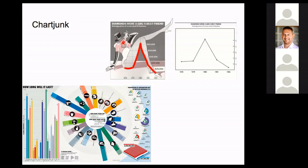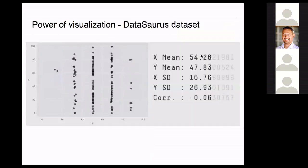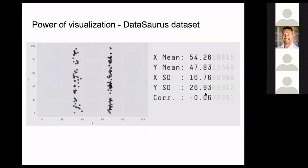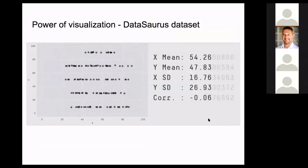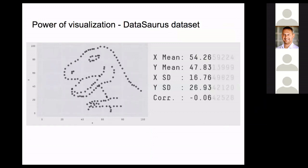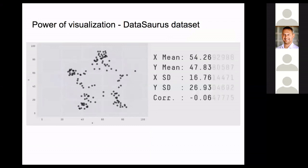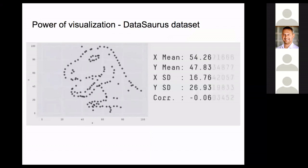To show the power of visualization: some of you may know Anscombe's data, where datasets have the same mean and variance but look completely different. There's an even better dataset called the Datasaurus, where you have the same x mean, y mean, same standard deviation and same correlation — but the data look completely different. When you look only at the numbers there's not enough information, but when you visualize your data you see the clear difference.